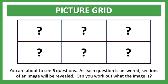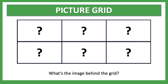We're going to move on to a picture grid activity. You're going to see six questions. As each question is answered, sections of an image will be revealed, and you've got to try and work out what that image is. What image is behind the grid is what we are trying to establish.